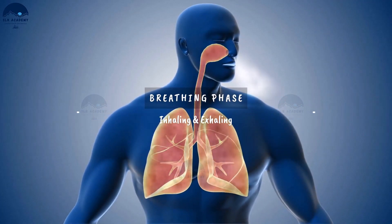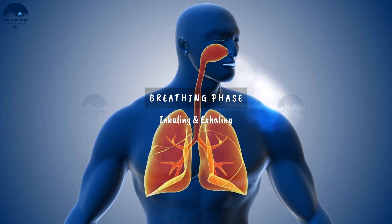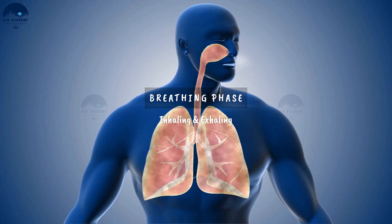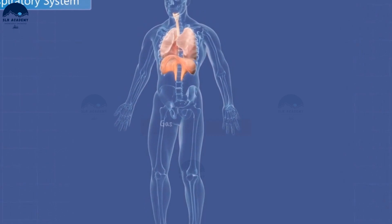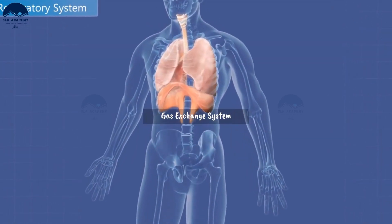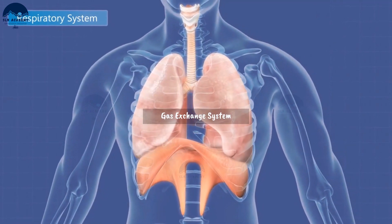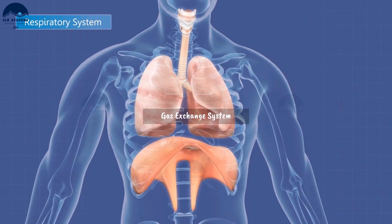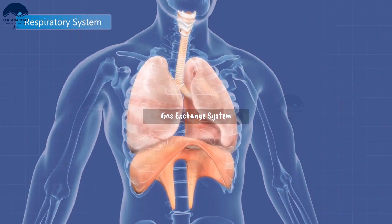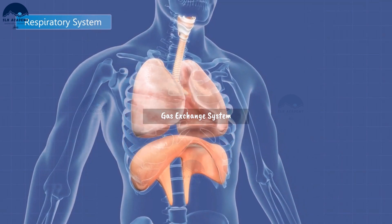Breathing is the first step in respiration. The first step in this process is breathing in air, or inhaling. Inhaling means bringing air rich in oxygen into the body. For respiration to happen, the body needs a constant supply of oxygen, which is done by breathing. Inhalation is the breathing in of air. To inhale, the lungs expand, decreasing the air pressure in the lungs.